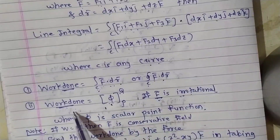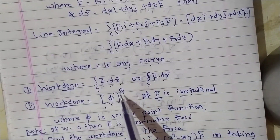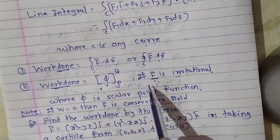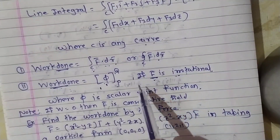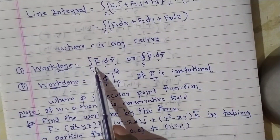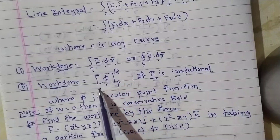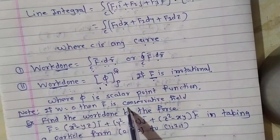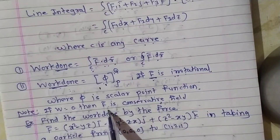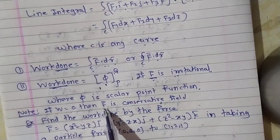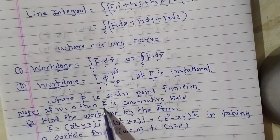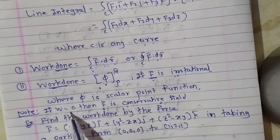If f̄ is irrotational, work done = φ from P to Q. One more important concept: f̄ is conservative if the work done (line integral) equals zero; otherwise it is not conservative. To summarize: f̄ is solenoidal if ∇·f̄ = 0, irrotational if ∇×f̄ = 0, and conservative if work done = 0.